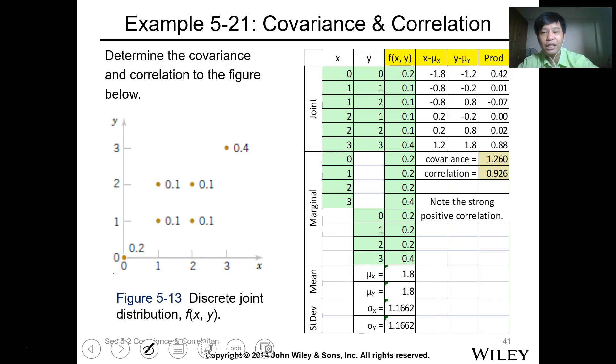Then you get the product. Multiply all of them, and that will be the product. When you get the sum, add them all. That will be the covariance. So we got the covariance at 1.260.